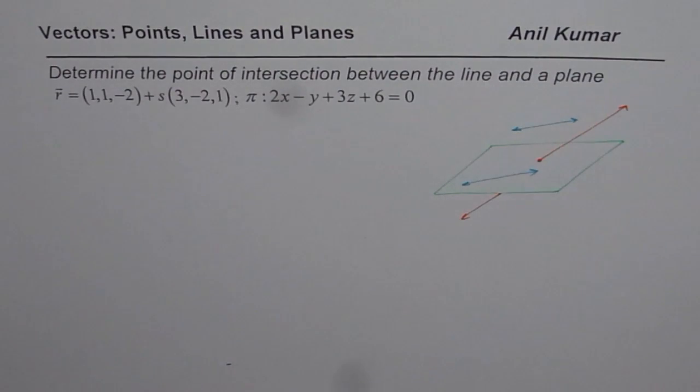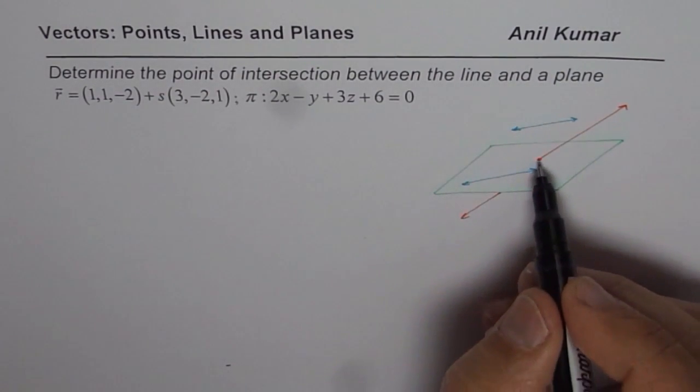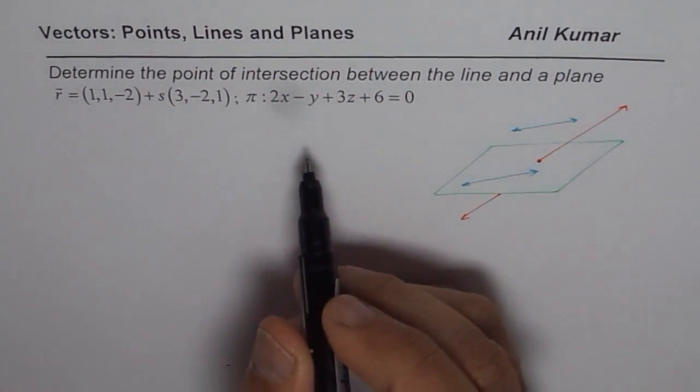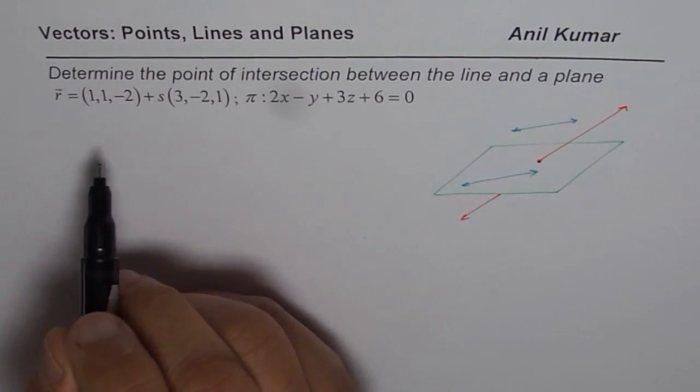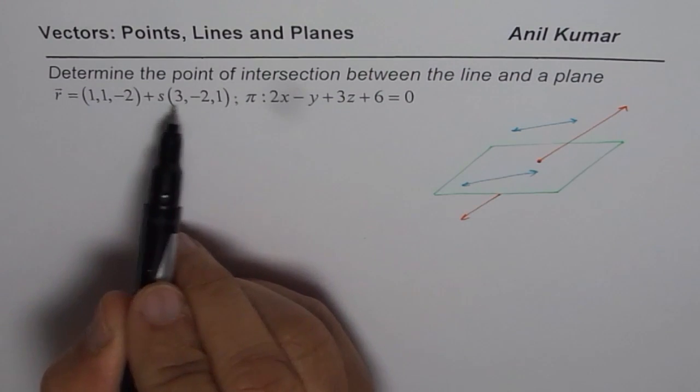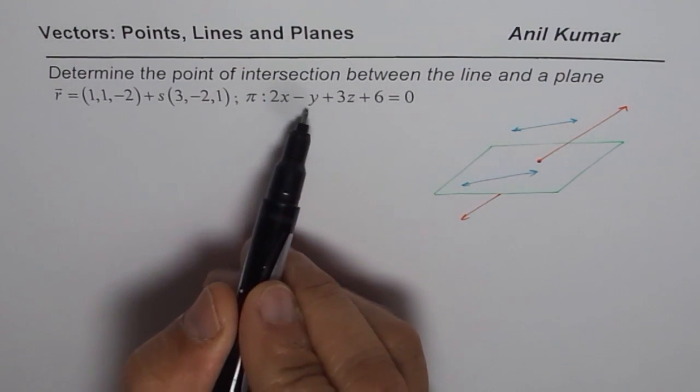Now the question here is, determine the point of intersection between the line and the plane. We are probably expecting the third scenario, one point of intersection. But let us figure it out. So, first step should be, from the equation of line, let us find what x, y, z are. And then we will substitute those in the equation for the plane.